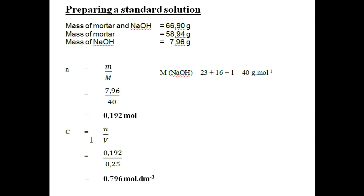To work out the concentration of the sodium hydroxide in the volumetric flask, concentration equals number of moles divided by volume. The number of moles is 0.192 and the volume is 0.25 dm³. We topped up the volumetric flask to the 250 cm³ mark, which converts to 0.25 dm³. The concentration of the sodium hydroxide solution is 0.796 moles per dm³. This is how we prepare a standard solution.